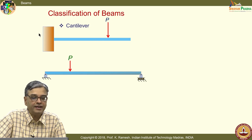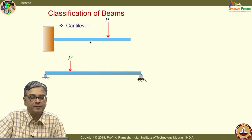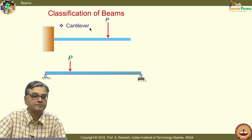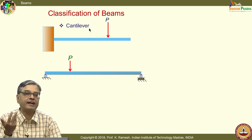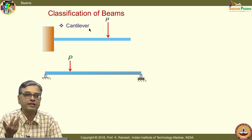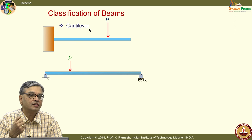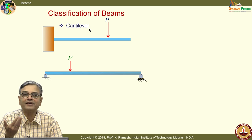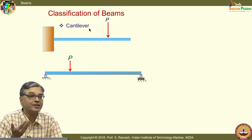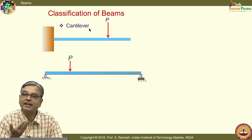You should be able to identify the support shown here. This has a fixed support, and I have a slender member with an end load. This has a particular name — this is called a cantilever. You have many examples of cantilevers in your surroundings. One simple example is your sunshade. Many sunshades in buildings are essentially cantilevers. And look at the branch of a tree — a branch is again a cantilever.